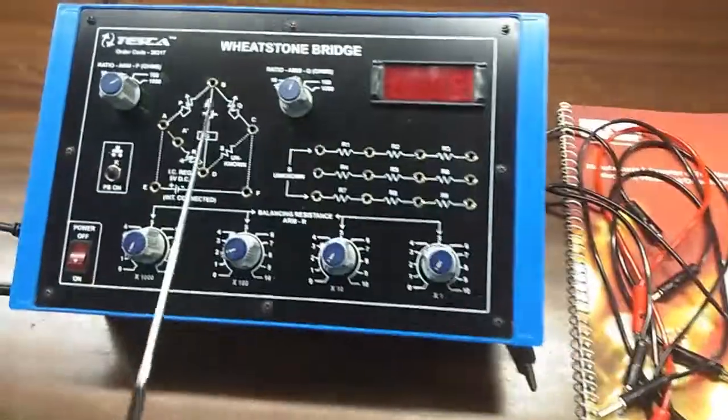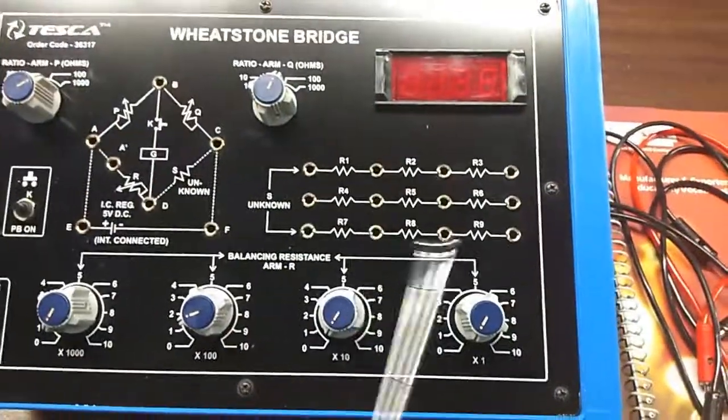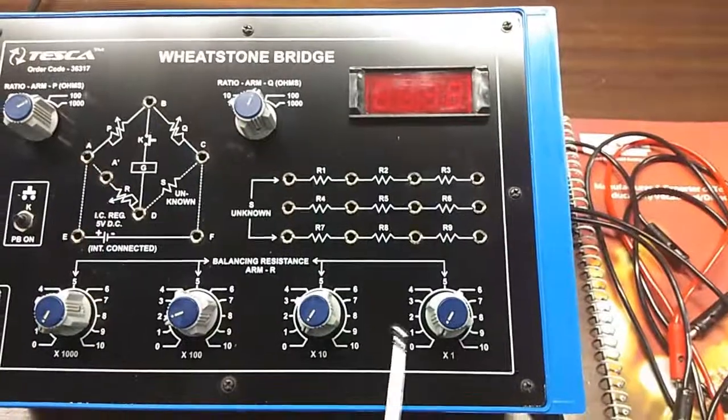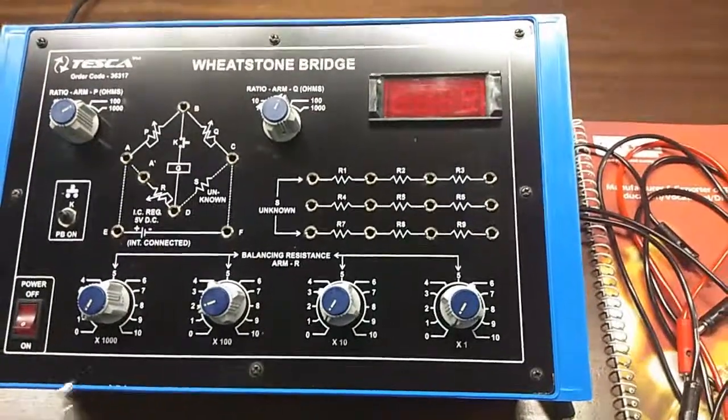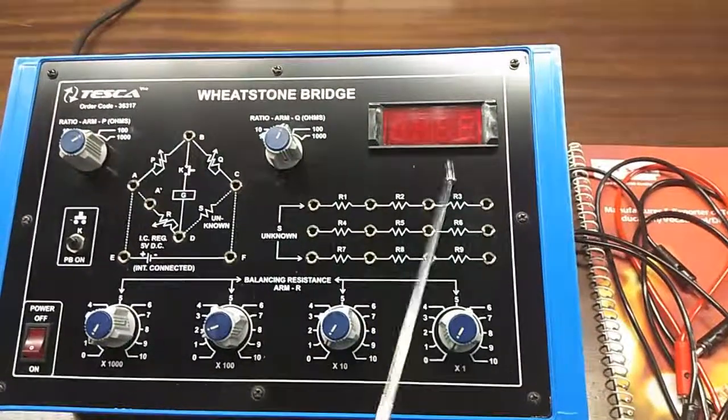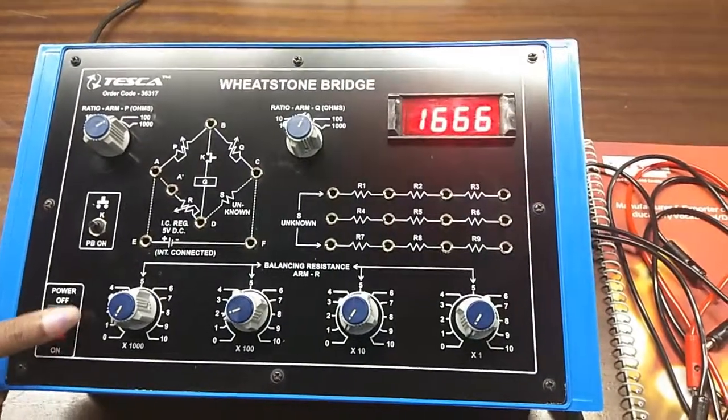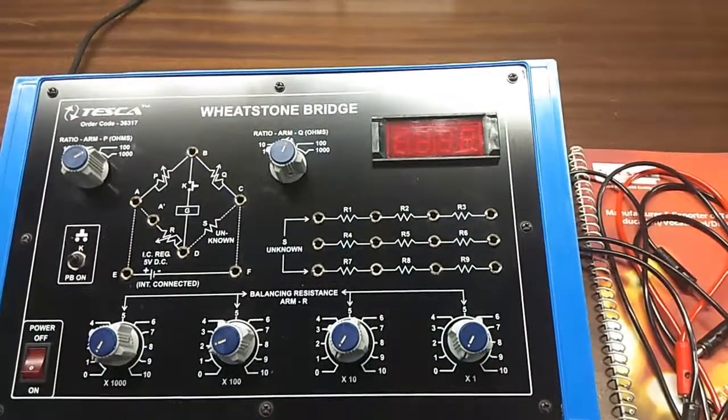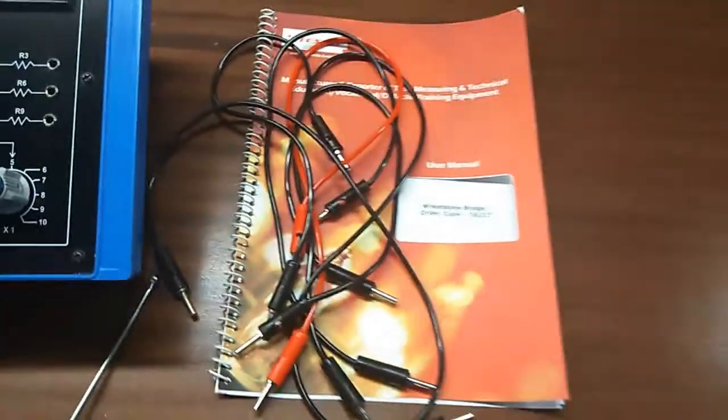This is the Wheatstone bridge. These are the unknown resistors, these are the inbuilt decade resistance boxes, this is the inbuilt galvanometer, and this is the main switch to turn on or off the kit. This is the user manual and patch cords - these are all included in this kit.